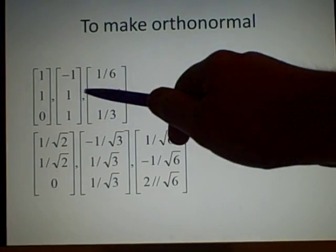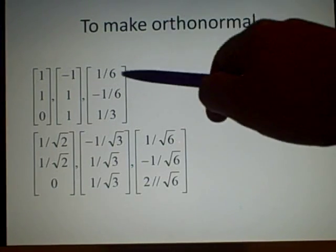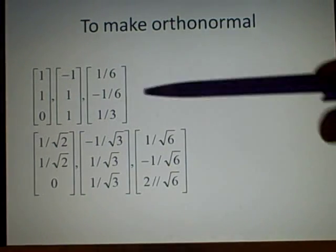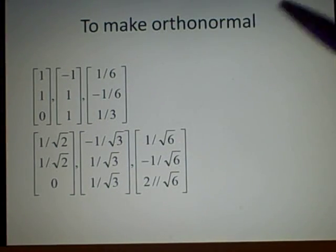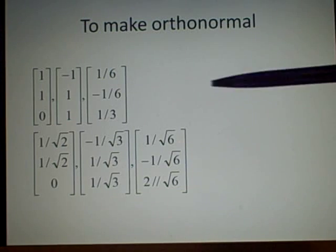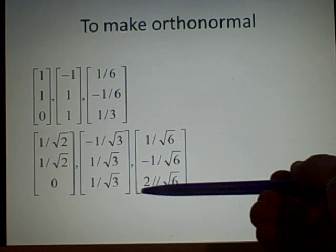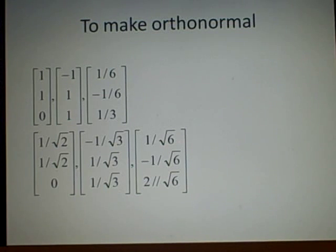For this one, we do exactly the same, which is 1, plus 1, plus 1, because we're doing 1 times 1, and we divide by root 3. This one's a bit trickier, but again, you'll end up with 1 over root 6, minus 1 over root 6, 2 over root 6. There we go.